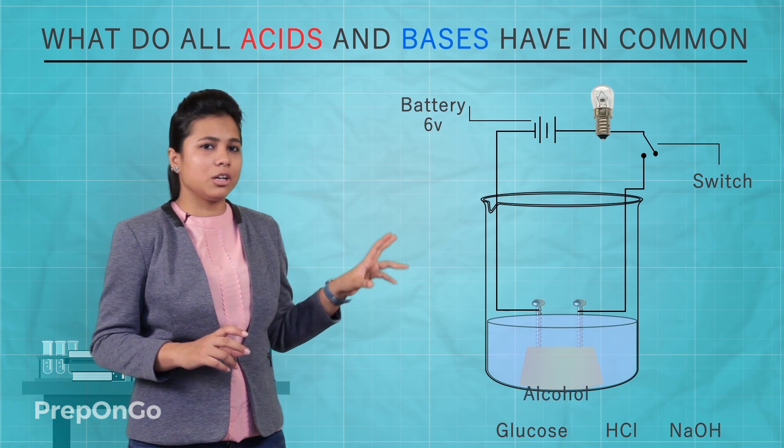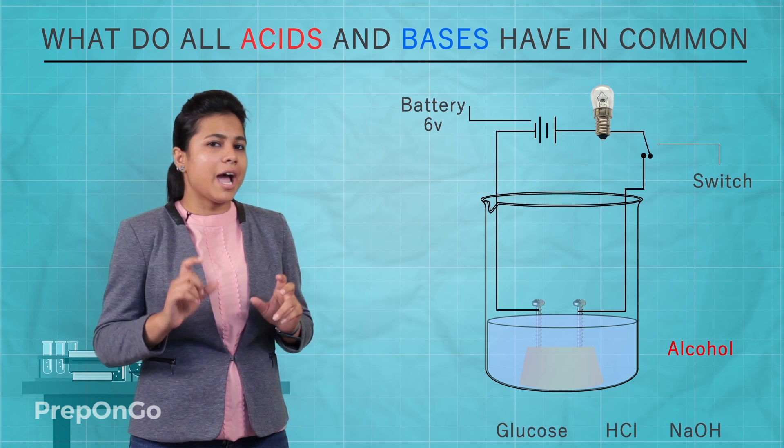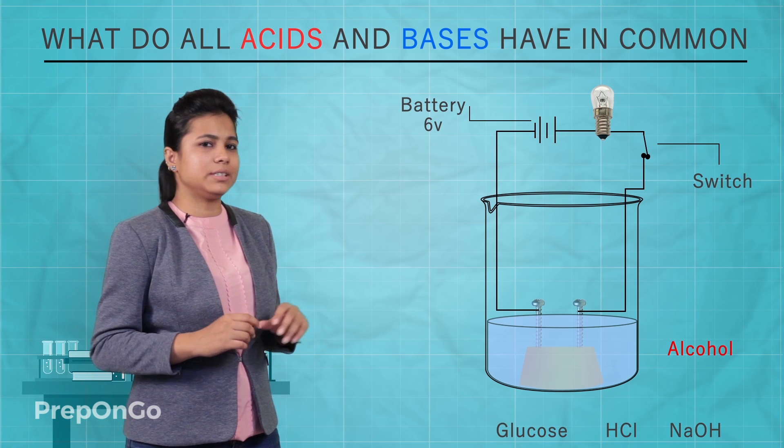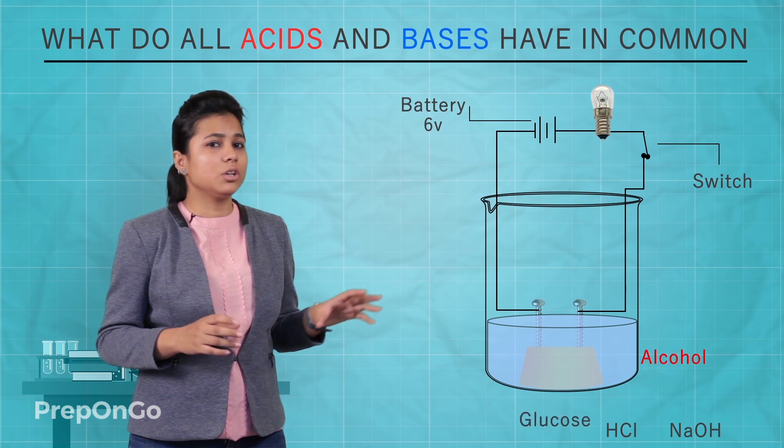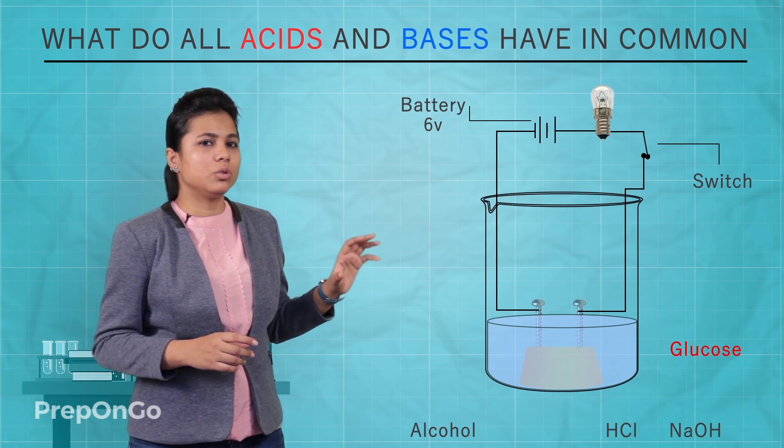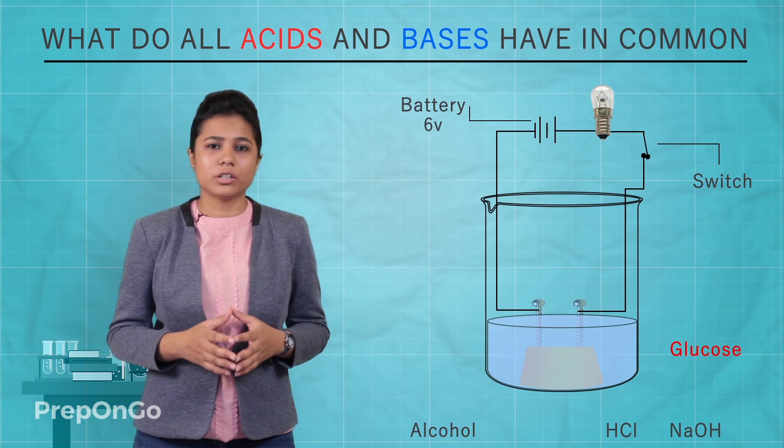When we pour alcohol into the beaker and turn on the switch, what do we see? It does not conduct electricity. Now let's try glucose. We put the glucose and again it does not conduct electricity.